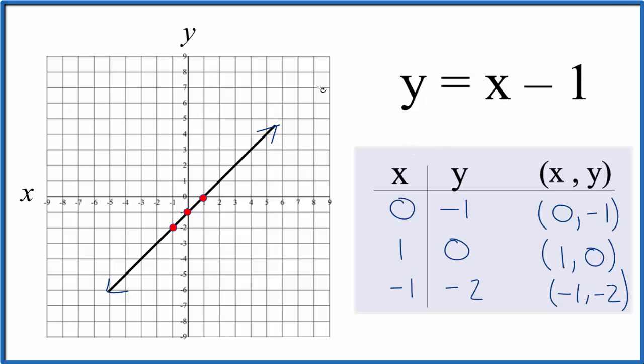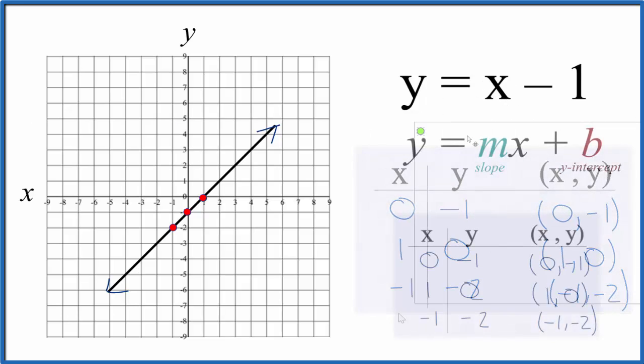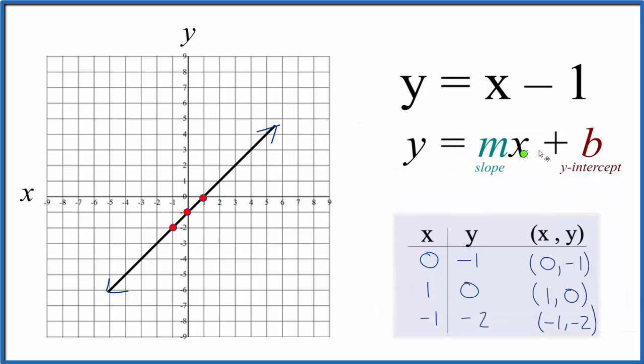Let's use the slope-intercept formula to check our work. So we have y equals mx plus b. b, that's the y-intercept. That's where the line's going to go through the y-axis. And that's negative 1. So we go down the y-axis, and right there is negative 1. That's where the line goes through the y-axis.